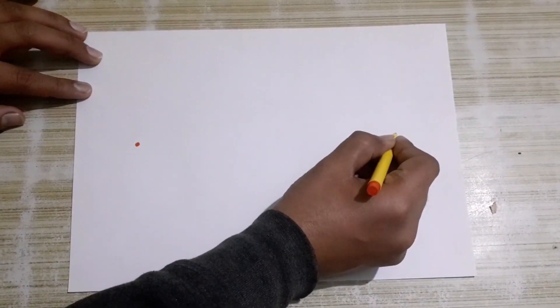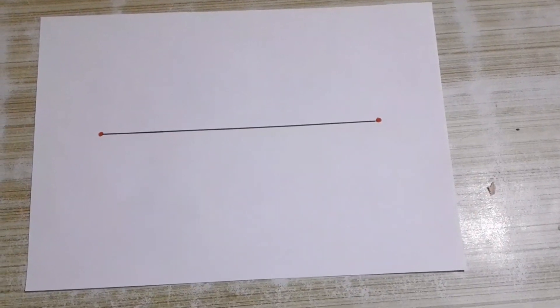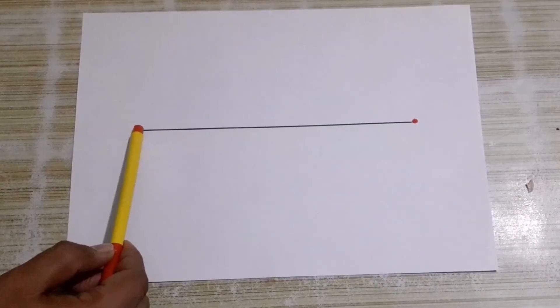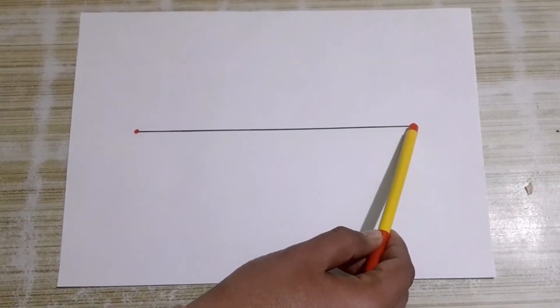Draw two points at some distance on the paper. Now assume that this sheet of paper represents a plane in the space-time continuum and these two points represent the distance that we want to travel.